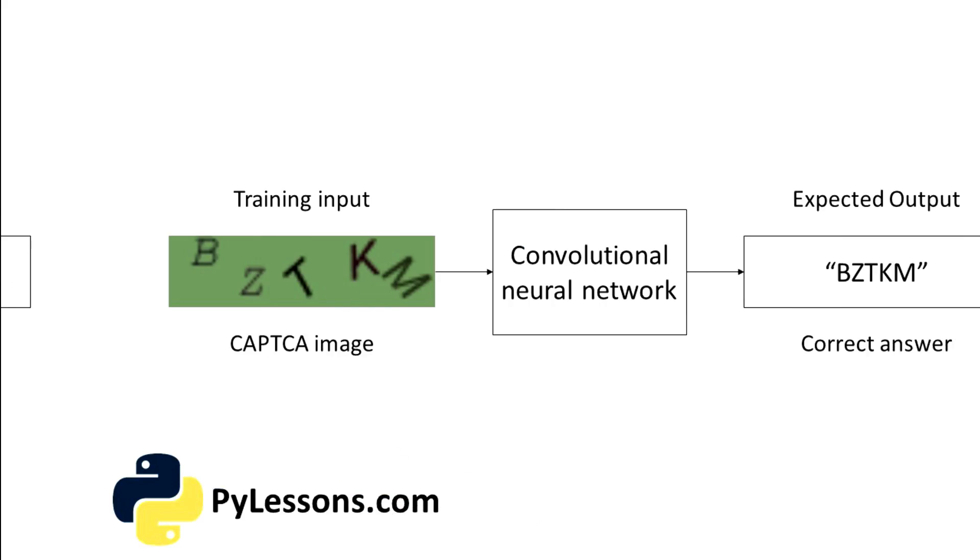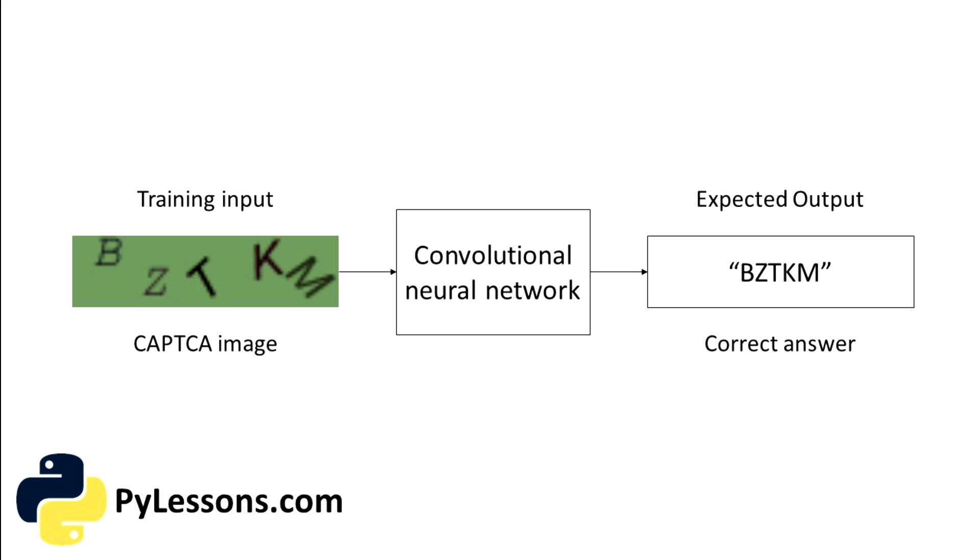So this is the mission. When we'll have our training data, we could use it to train our convolutional neural network. That would look like this. Between them is our convolutional network. We give a CAPTCHA image to it and our network gives us an answer. But that's not the final model we need.